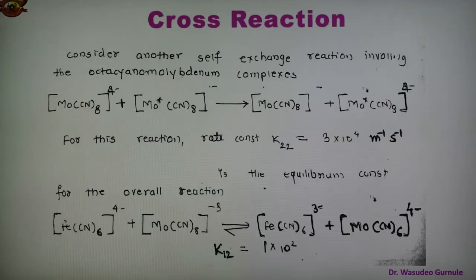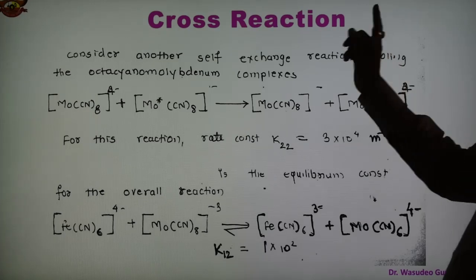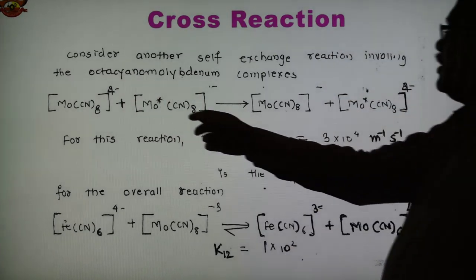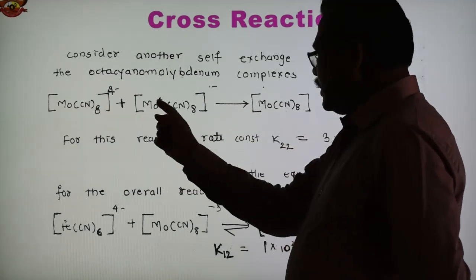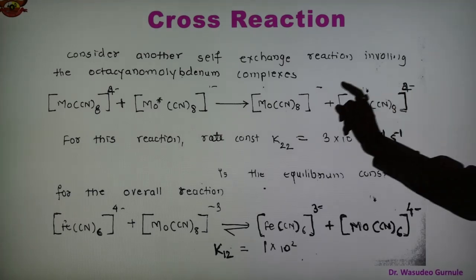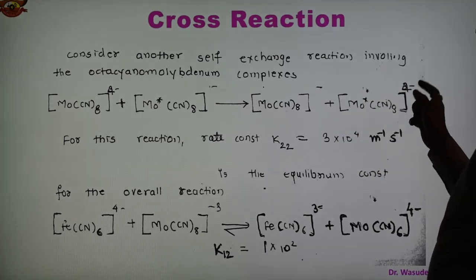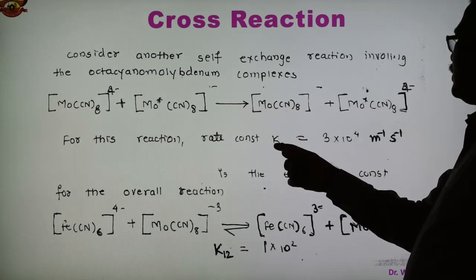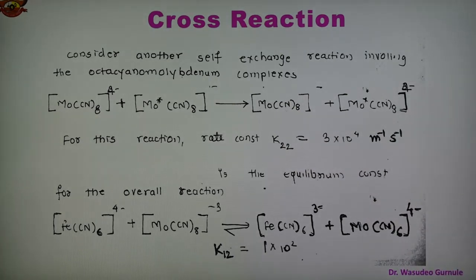Consider another self-exchange reaction which involves the octacyanomolybdate complex. Here Mo(CN)8⁴⁻ undergoes self-exchange. The ligands are the same and the metals are Mo and Mo*. For this self-exchange reaction, the rate constant K22 equals 3×10⁴ per meter per second.